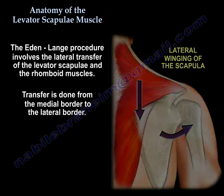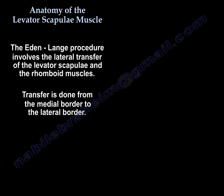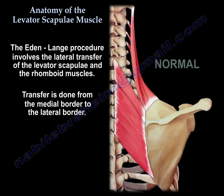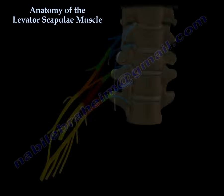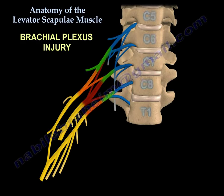In this case, they use the Eden-Lang transfer, which lateralizes the levator scapulae and the rhomboids. You transfer from the medial border to the lateral border.